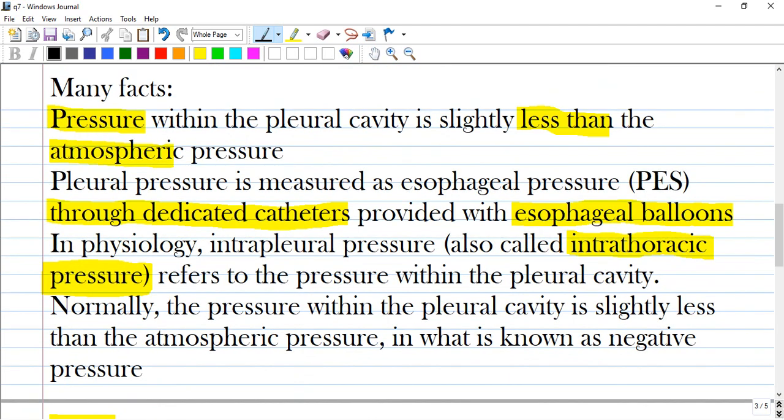I have many facts here that are important and you can pause and make notes. Pressure within the pleural cavity is slightly less than atmospheric pressure. Pleural pressure is measured as esophageal pressure through a dedicated catheter provided with an esophageal balloon, as I said. So intrapleural pressure is intrathoracic pressure, as the thorax participates and they are closely anatomically related and go in the same direction usually, if there is no pathology like pneumothorax. Normally, the pressure within the pleural cavity is slightly less than atmospheric pressure.